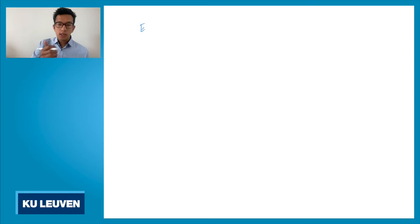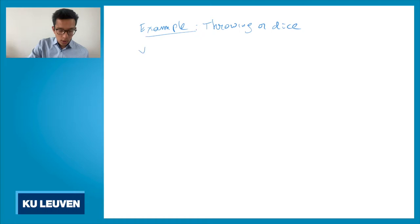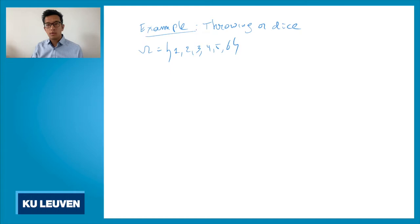A simple example of a random experiment and its probability space: throwing a die. What's the universe? The possible outcomes are one, two, three, four, five, or six. So you know that if you throw the die, you get one of these numbers. You can never get zero, never get seven, or anything larger.